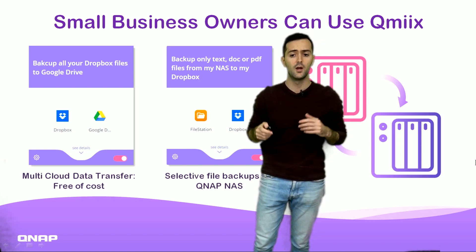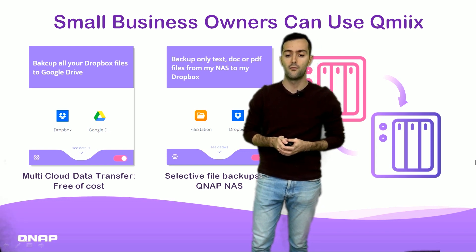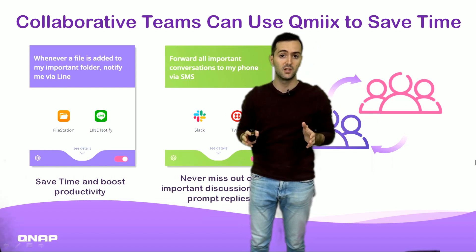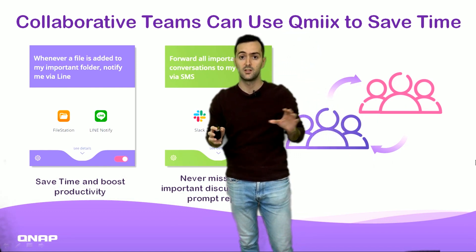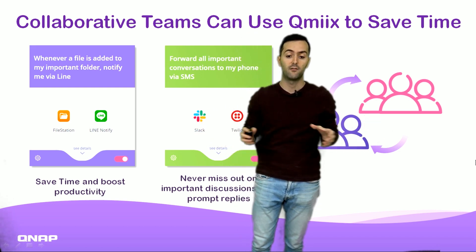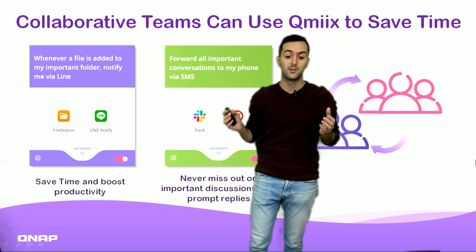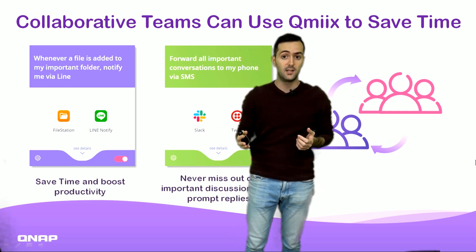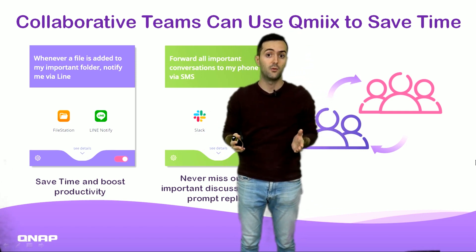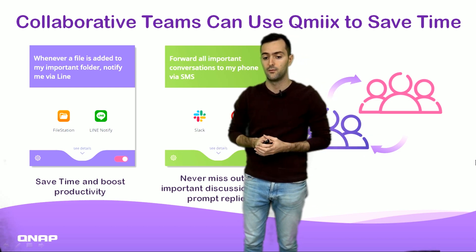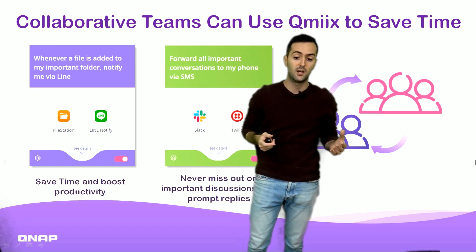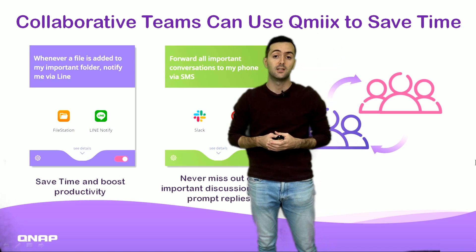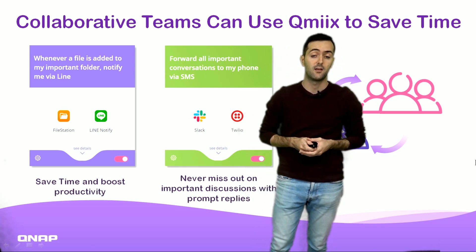This is a useful solution for small business owners. QMix can also be used to coordinate between teams in large corporate departments. For example, if a sales team and marketing team need to work together, whenever a file is added to an important folder, you can be notified via Line. You'll never miss important discussions happening on Slack or any other application the team is using.